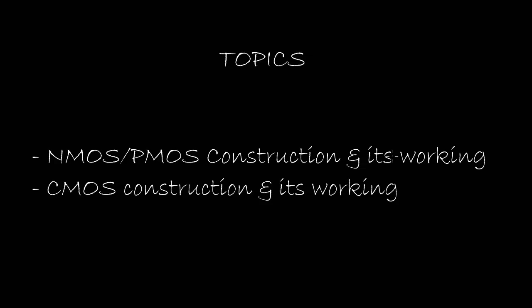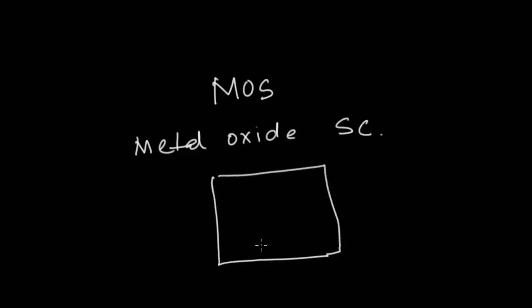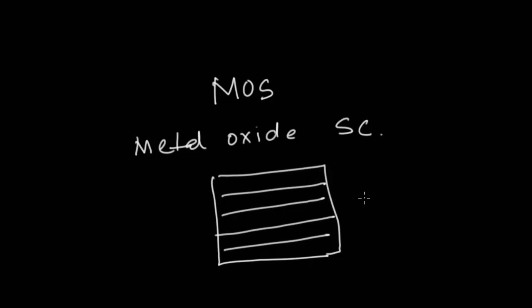Hello everyone, welcome to Electronically Connected. In this video we're going to cover the cross section of an NMOS and a PMOS — how they are constructed and how they work — followed by the cross section of a CMOS, its construction and working. A MOS is a structure created by superimposing several layers of conducting and insulating materials. It stands for Metal Oxide Semiconductor and is a sandwich-like material. The structure is manufactured in a foundry using chemical process steps like oxidation, doping, lithography, deposition, etching, and many more.